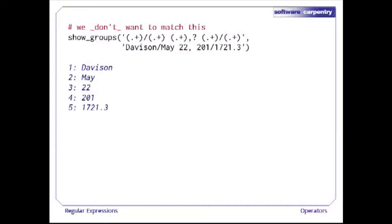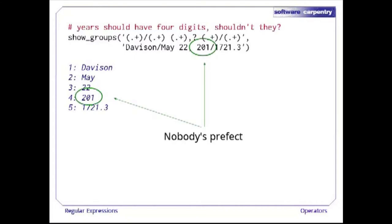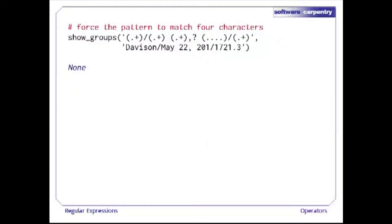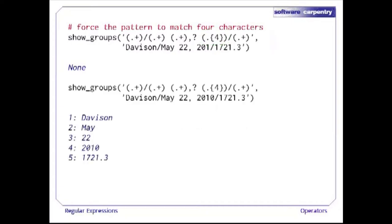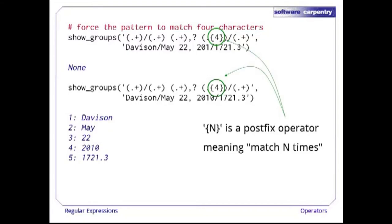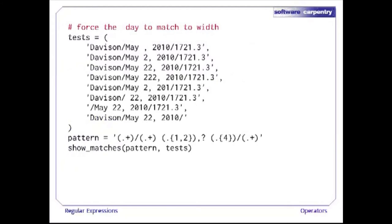Let's tighten up our pattern a little bit more. We don't want to match a record where somebody has mistyped the year and given three digits instead of four. We could use four dots in a row, but this won't win any awards for readability. Instead, let's put the digit 4 in curly braces after the dot. Curly braces with a number between them is a postfix operator meaning match the pattern exactly this many times — here, dot four times. Here are some records in which the dates are either correct or mangled.